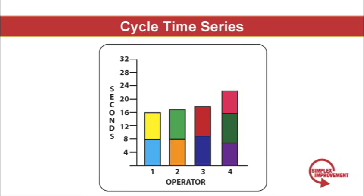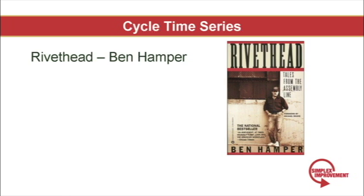Each worker along a balanced assembly line has to complete a set amount of work within a given time frame. This is called a cycle time. In Hamper's case he was able to not only complete his own work within a cycle time but also that of the next workstation.